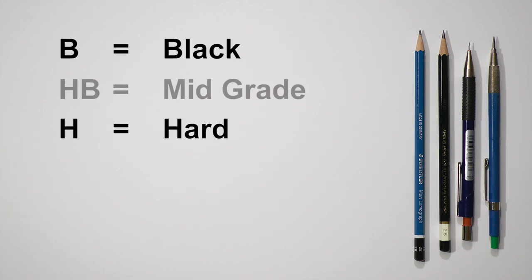The B stands for black, H stands for hard, and in between these two is HB, a common writing grade, the US number two grade.